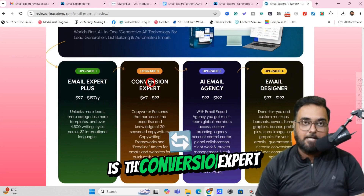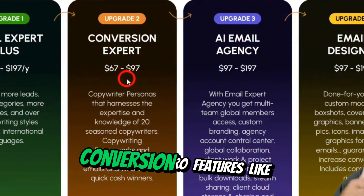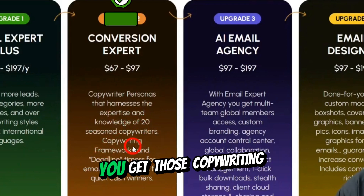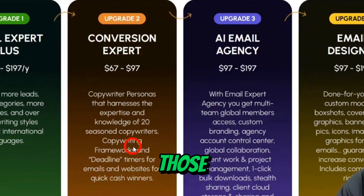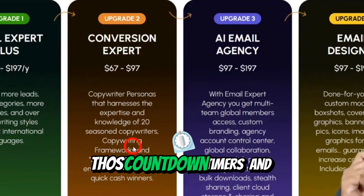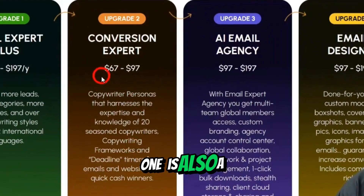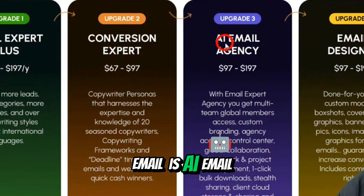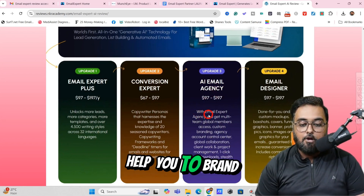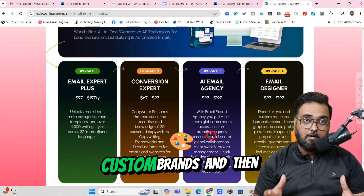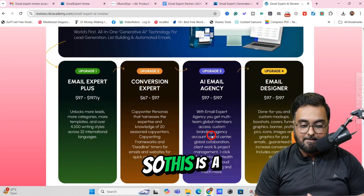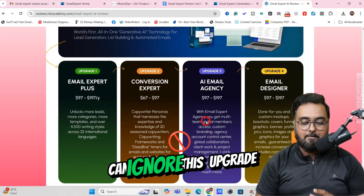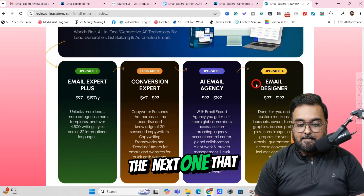The next upgrade is OTO two, which is Conversion Expert, that gives you different conversion pro features: the expertise and knowledge of 20 seasoned copywriters, those copywriting frameworks, and those scarcity builders like countdown timers. This is also a good one to have and costs only $67 one-time. The next one is the AI Email Agency, that can help you to brand it according to your custom brands and then sell it out as well — good if you are thinking of reselling.